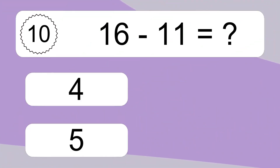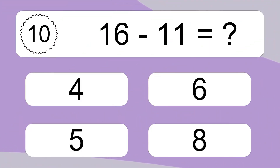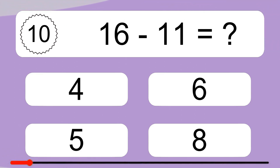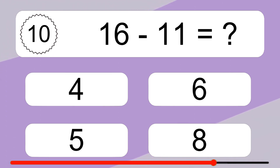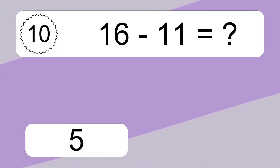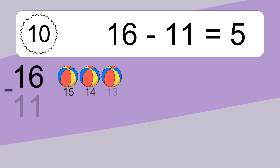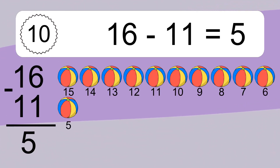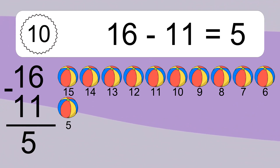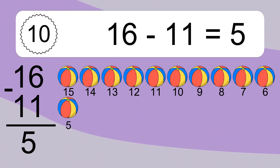16 minus 11 equals what? 16 minus 11 equals 5. Let's count it: 15, 14, 13, 12, 11, 10, 9, 8, 7, 6, 5.